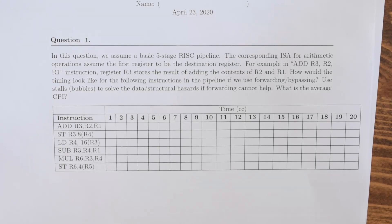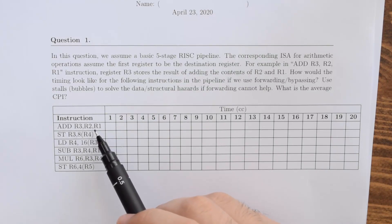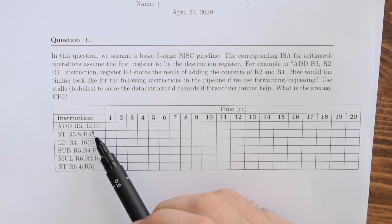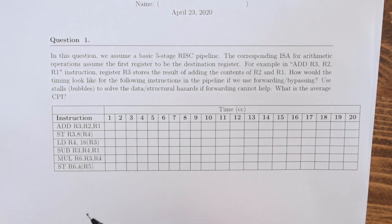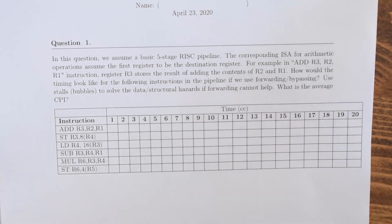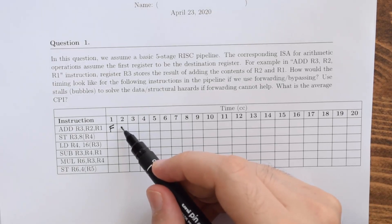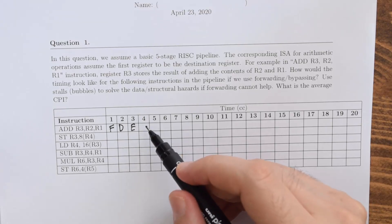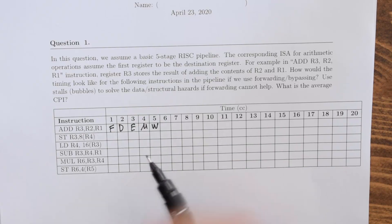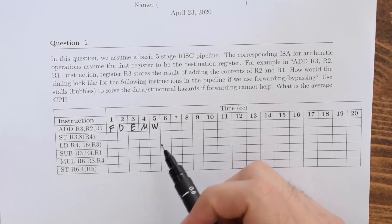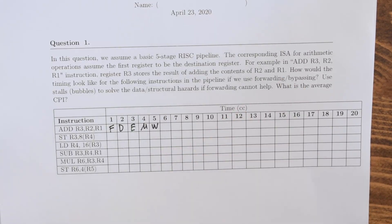Even though we use forwarding, we already know that sometimes forwarding and bypassing cannot help. In those cases, we are allowed to use pipeline stalls. The question is to draw the timeline and calculate the average CPI. For the first instruction, there is no problem because there is no preceding instruction, so the possibility of any hazard is zero. We have all five pipeline stages: instruction fetch (F), instruction decode (D), execution (E), memory (M), and write back (W). We look forward to see if subsequent instructions will flow without stalls using forwarding.